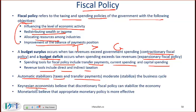Keynesian economists believe that discretionary fiscal policy can stabilize the economy. If an economy is in a recession, Keynesian economists will argue for fiscal policy measures to kick the economy out of recession. Monetarists do not have a strong view on this and would prefer that monetary policy be used, arguing that there should be a stable supply of money.